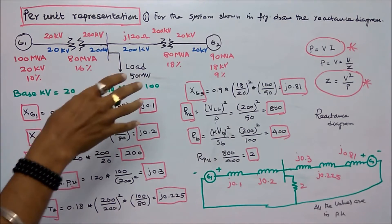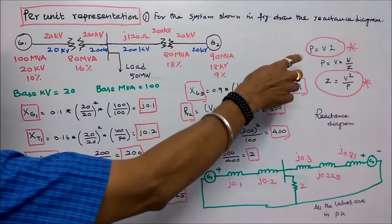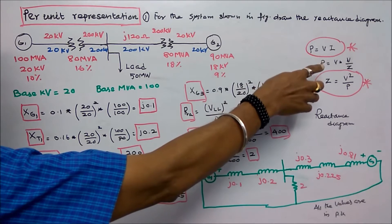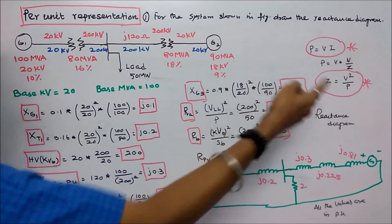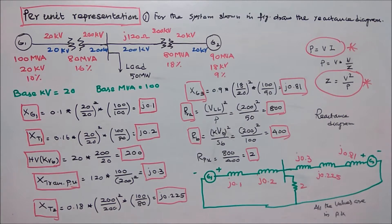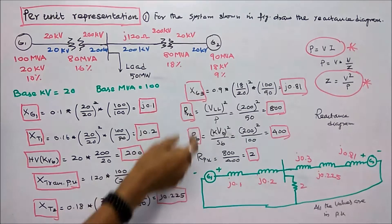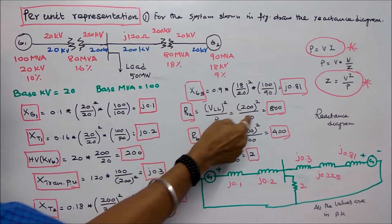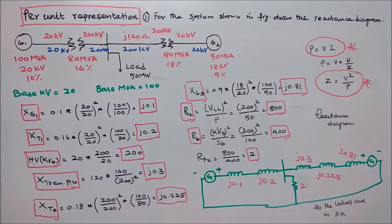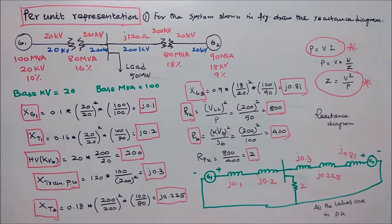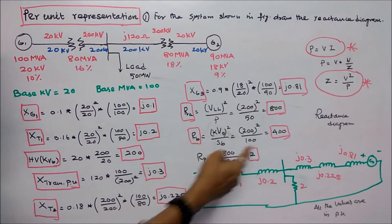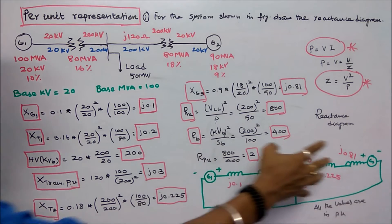Next I find the per-unit resistance of the load. Power P = V × I = V²/Z, therefore Z = V²/P. The given load is 50 megawatts, so the actual resistance equals (line-to-line voltage)² / P = 200² / 50 = 800 ohms. The base resistance equals kVb² / Sb = 200² / 100 = 400 ohms. Therefore the per-unit resistance = actual / base = 800 / 400 = 2.